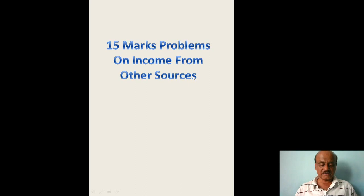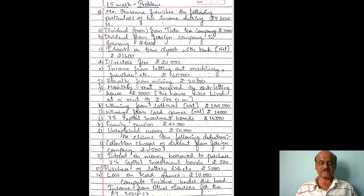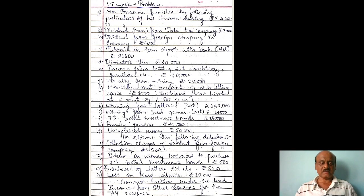Let us see one problem carrying 15 marks. Mr. Prasanna furnishes the following particulars of his income during previous year 2020-21. The first item is dividend gross from Tata Tea Company: Rs. 3,000.